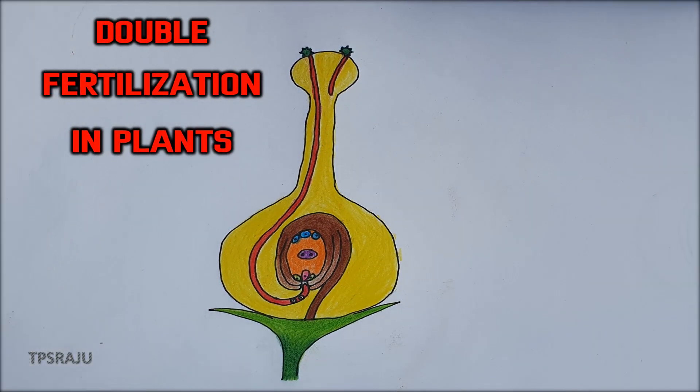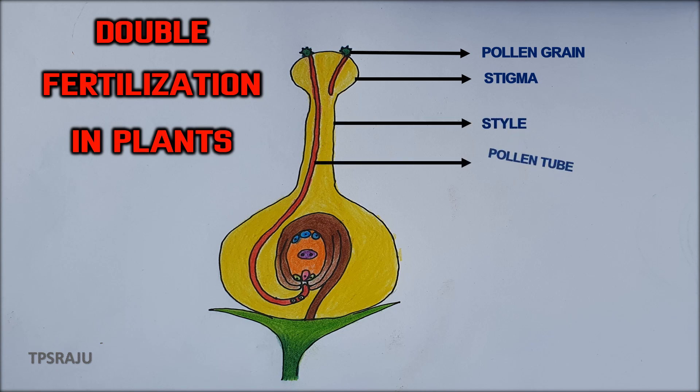Finally shall we label the parts. Pollen grain, stigma, style, pollen tube, ovary, ovule.